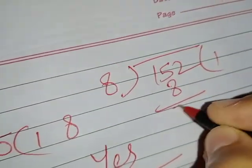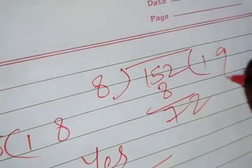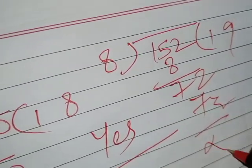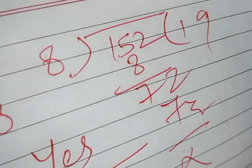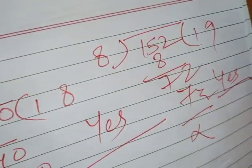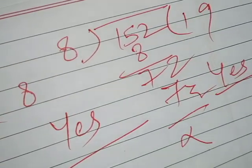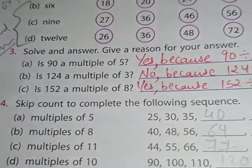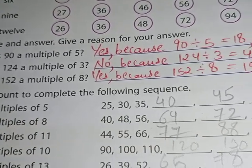7 will be left here, then 2. Then 8 nines are 72, cross. 0 is the remainder. So when we have 0 in remainder, that time yes, 152 is a multiple of 8. Clear? So any number will be considered as multiple when we have 0 in remainder, otherwise no.